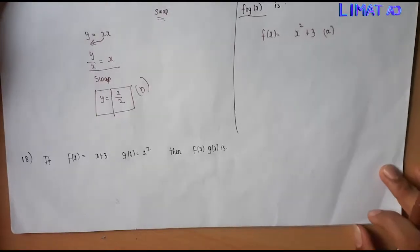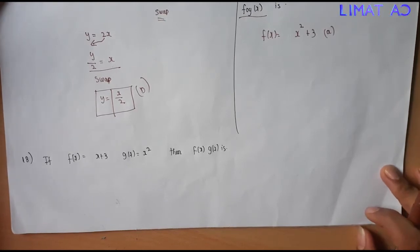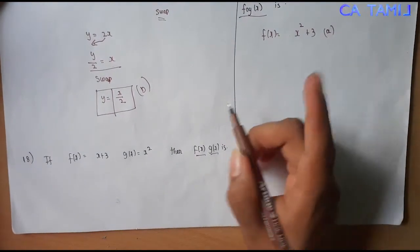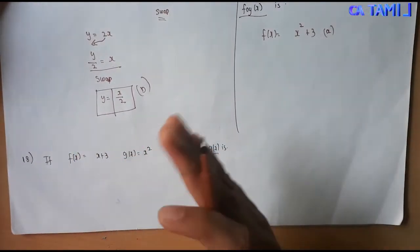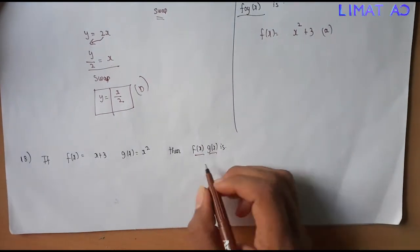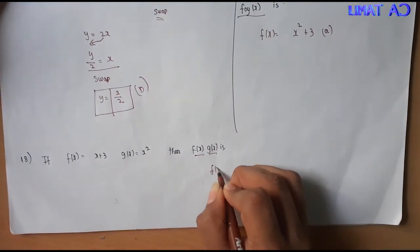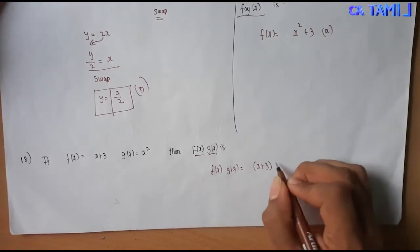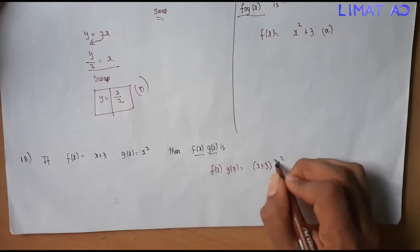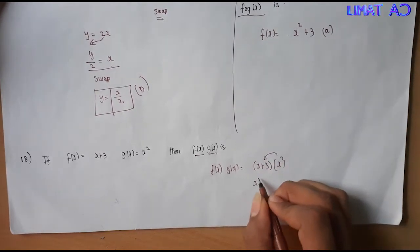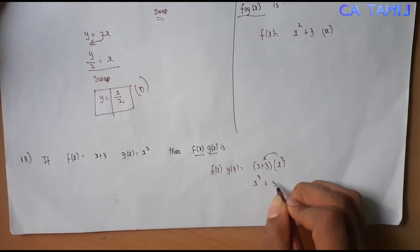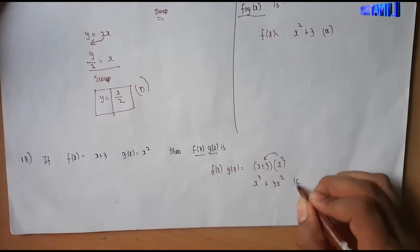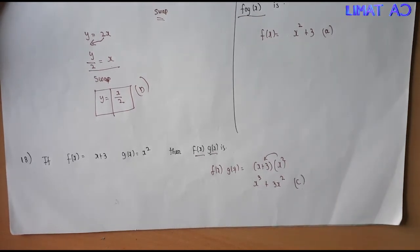Sum number 18. If f of x is equal to x plus 3, and g of x is equal to x squared, then f of x into g of x — so f of g of x equals x plus 3 where g of x is x squared, giving x cubed plus 3x squared. So the answer is option C.